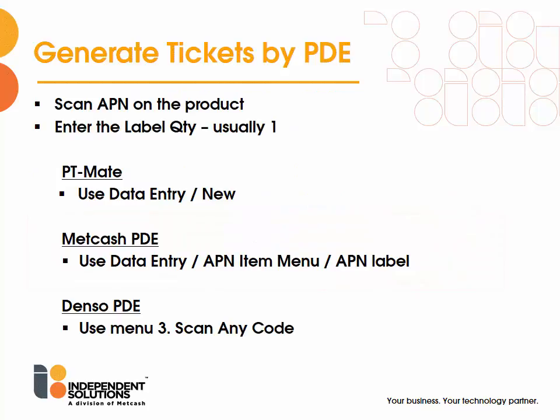To generate tickets by PDE, scan the APN on the product and then enter the label quantity, usually 1.